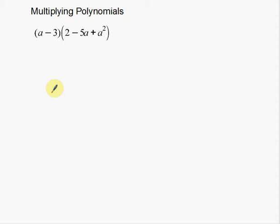I just have one example of this first type, which is a binomial times a trinomial. And then I have another one where we're going to have three different parentheses. Now, what you've got to think is this is a process you've actually seen before. If you're at this level of mathematics, you've also seen something like this.